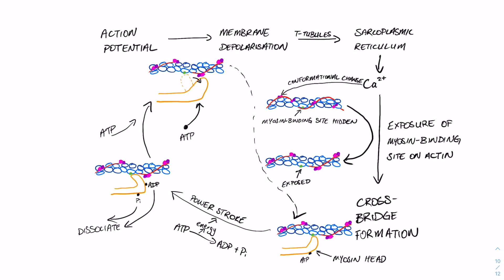Therefore, that cycle is going to continue over and over, this cross bridge cycling, as long as there are available myosin binding sites on those actin filaments. And what determined whether those sites were available?